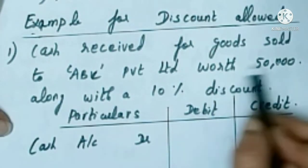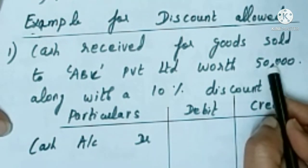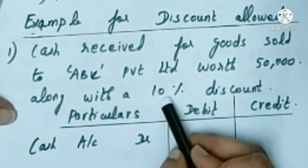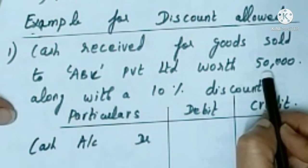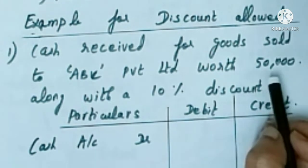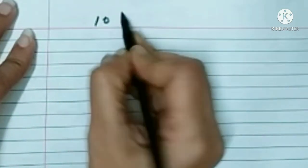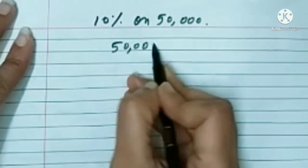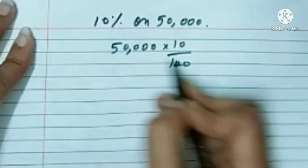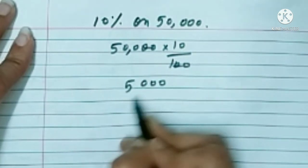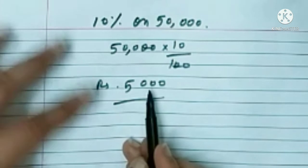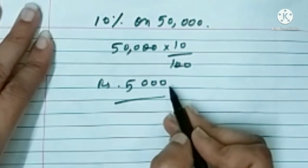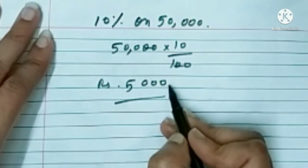Cash received for rupees 50,000 worth of goods sold, and they have allowed a 10% discount. What is 10% discount on rupees 50,000? 50,000 into 10 by 100 equals rupees 5,000. This is discount allowed. When we allow discount to our customers, it is a loss for us. That's why discount allowed is debited, as per the nominal account rule — debit all expenses and losses.